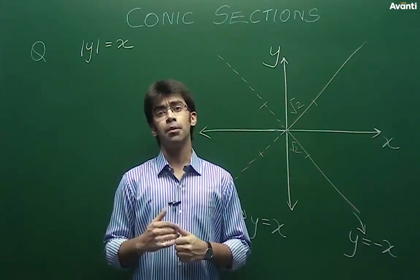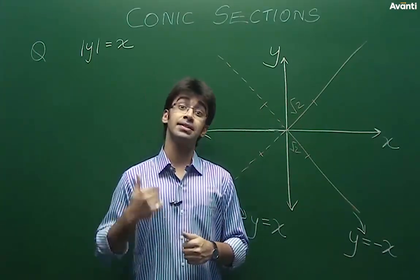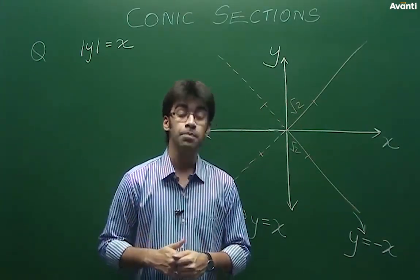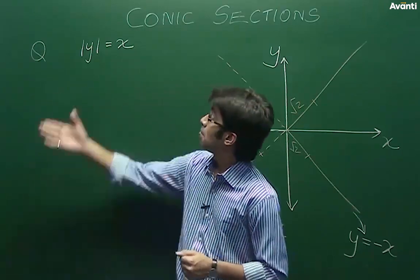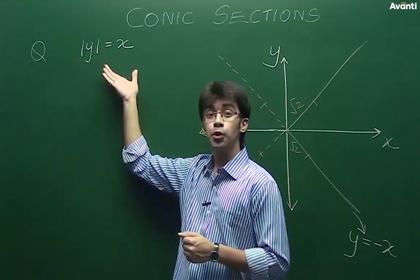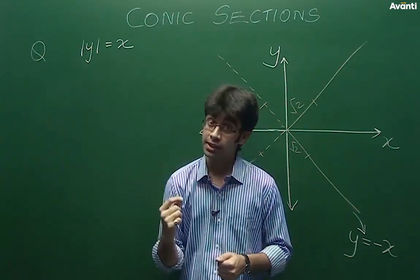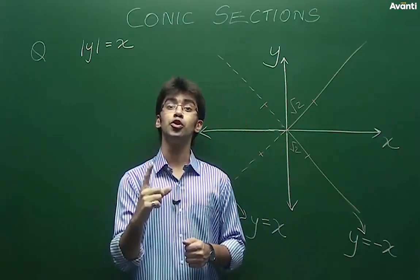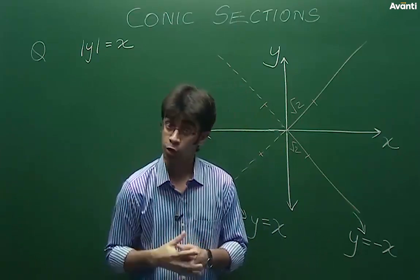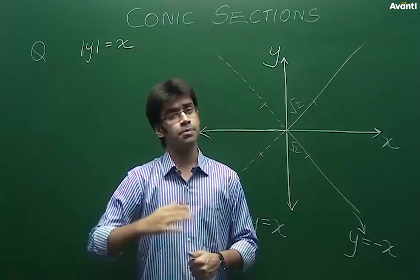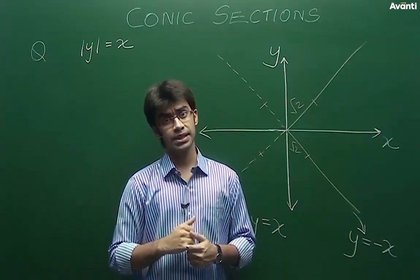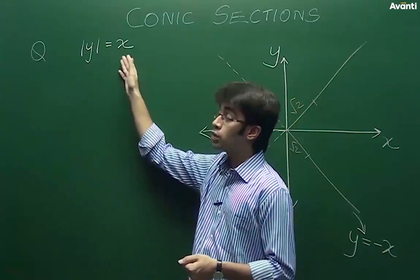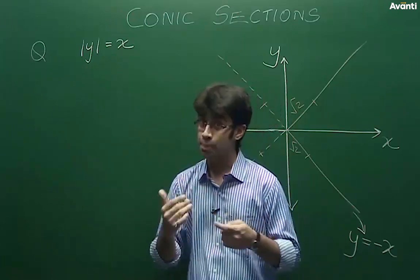So in this question, we have got a circle equation — which pair of lines |y| = x does it touch at a distance of root 2 units from the origin? First, we will try to understand what |y| = x represents.